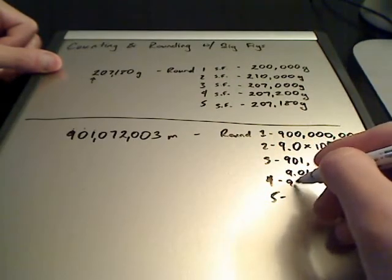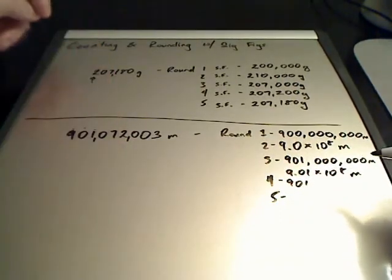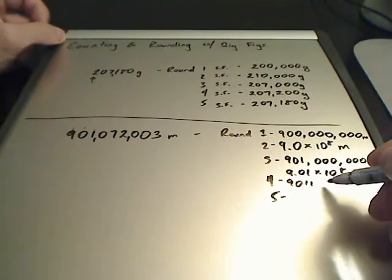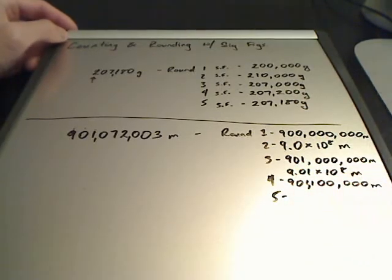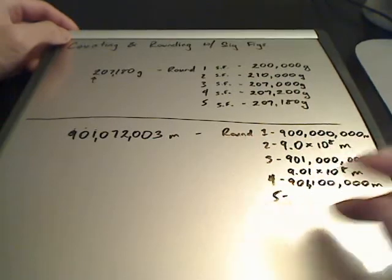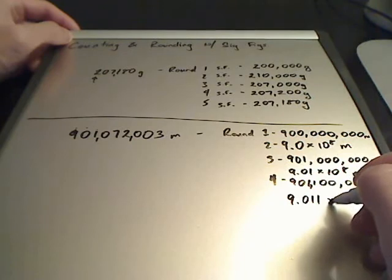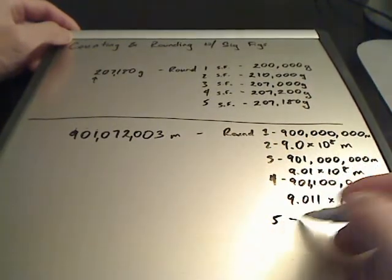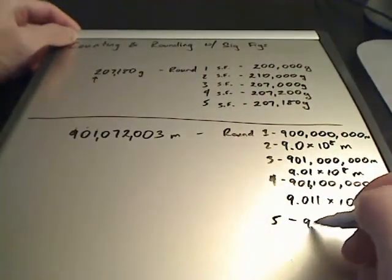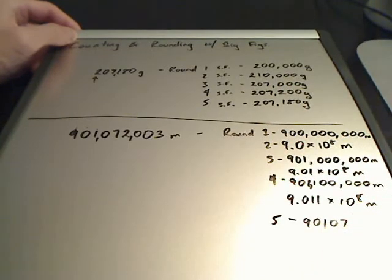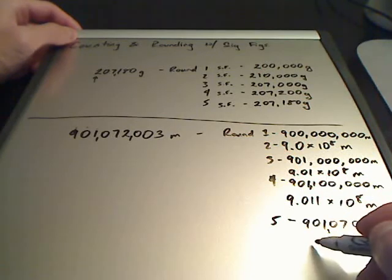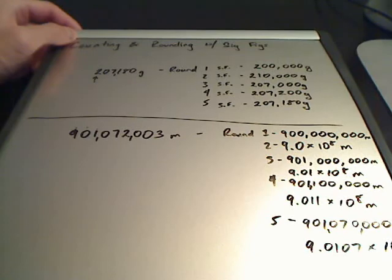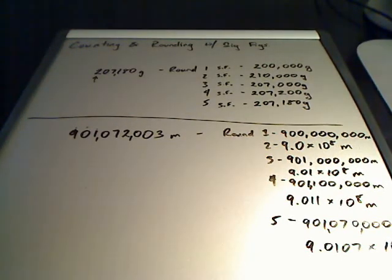For 4 sig figs: 9, 0, 1, 0 are the first four sig figs; the 7 is the rounding digit and pushes the 0 to a 1, giving 901,100,000 meters — or 9.011 × 10⁸ meters. Finally, for 5 sig figs: 9, 0, 1, 0, 7 are the first five; the 2 is the rounding digit, keeping the 7 as 7, giving 901,070,000 meters — or 9.0107 × 10⁸ meters. So that's basically rounding and counting with significant figures. Hopefully that helped.